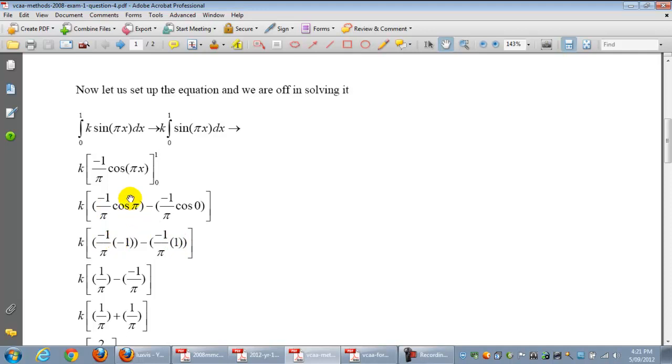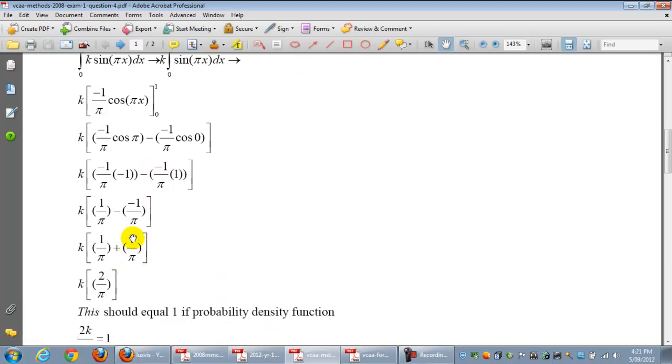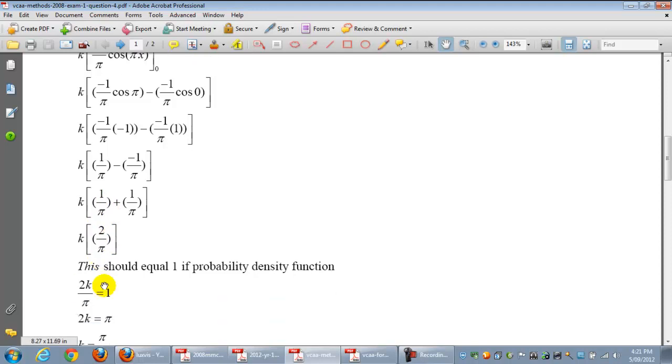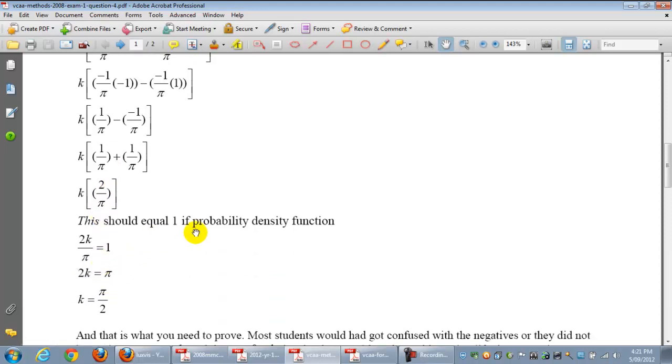And that's what the examiners were testing out to see. The other trap was that there's a lot of negatives floating around. There's a negative here, there's a negative here, there's a negative here. So notice the two negatives. It's going to end up as a positive. So we have k, 2, and pi. And now we need to know that it is a probability density function. So this area must equal 1. And there you go, k is equal to pi on 2.